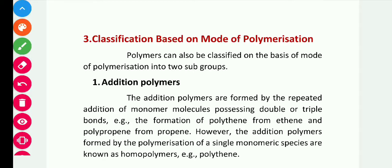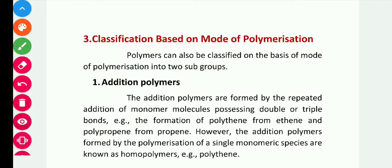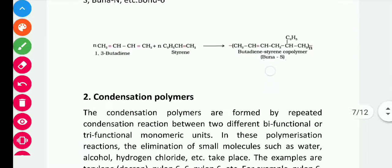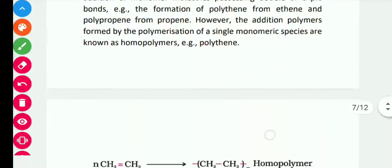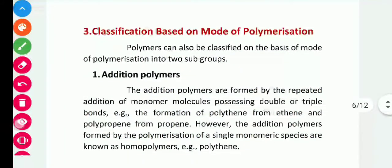We already learned about classification based on the source and based on the structure. Now we learn classification based on the mode of polymerization. Polymers can also be classified on the basis of mode of polymerization into two subgroups: addition polymers and condensation polymers.